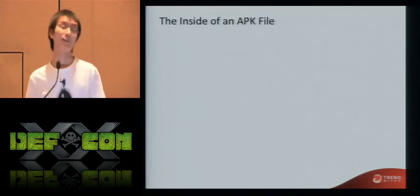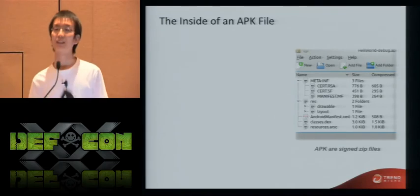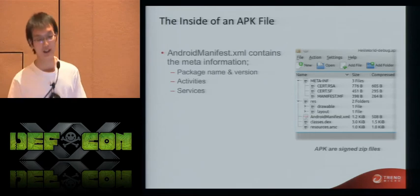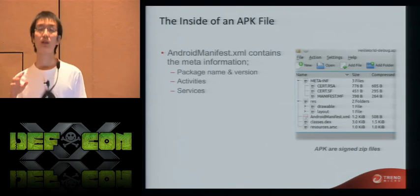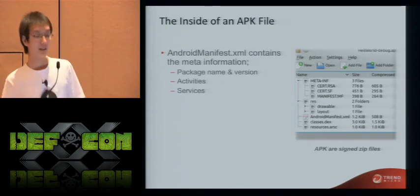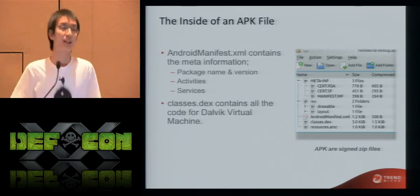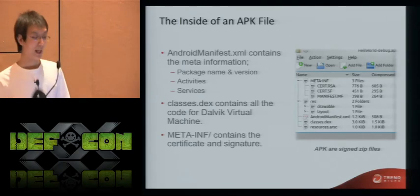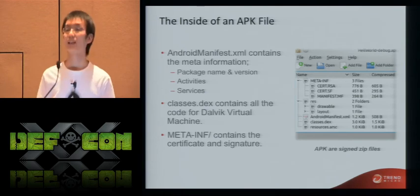I want to show you what happened to me and how I found this security risk. This year in March, one day I was playing a game on my Android phone and an advertisement popped up on my screen. I hated it, so I decided to remove it. I looked inside the APK files and found that APKs are signed zip files. They contain the AndroidManifest.xml — where you can find the package name, version, definitions for services, activities, receivers, and so on — and the classes.dex, where you can find the code for the Dalvik virtual machine. And in the META-INF folder, you can find the certificate and signature.